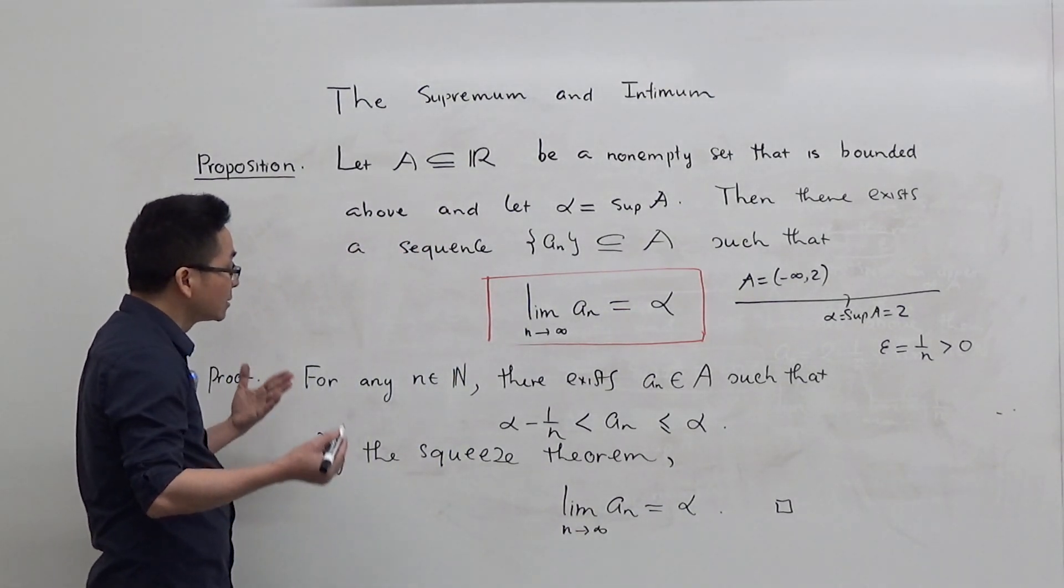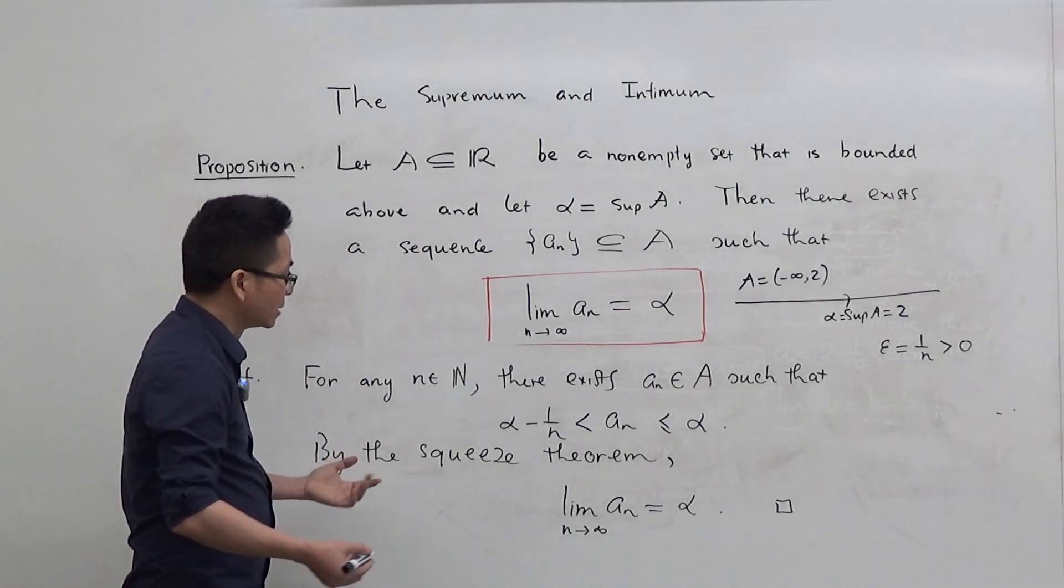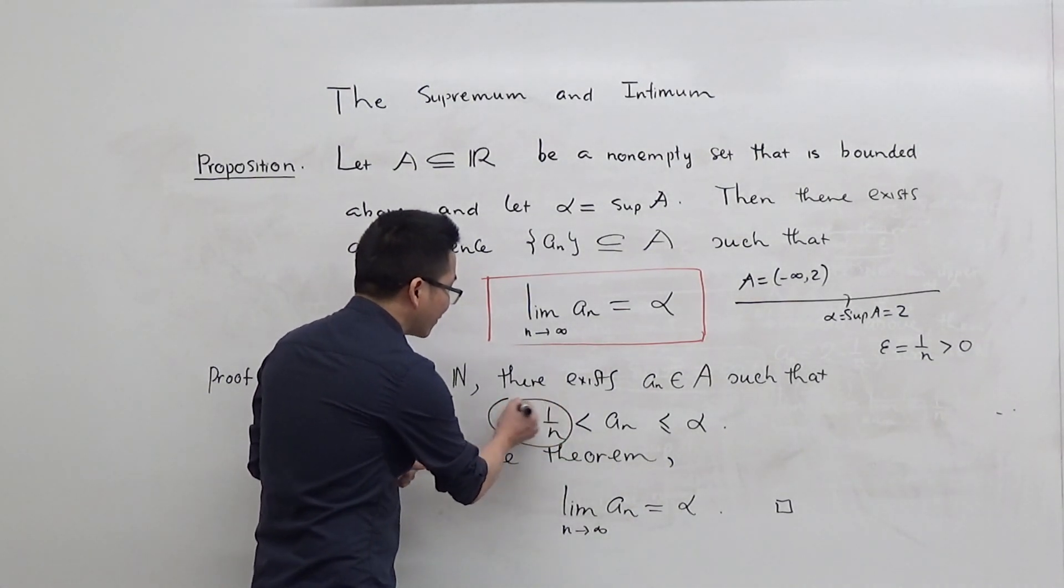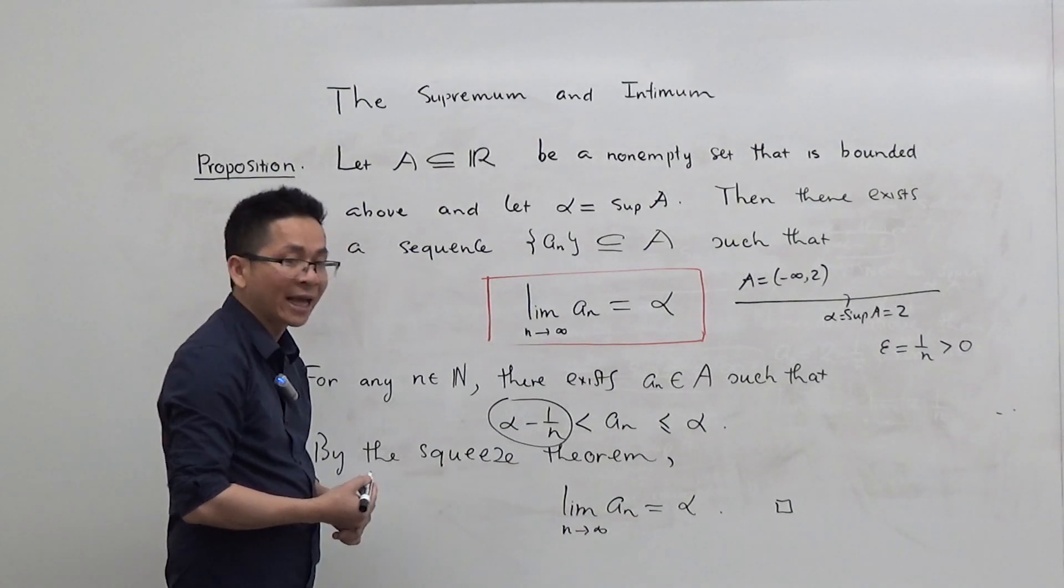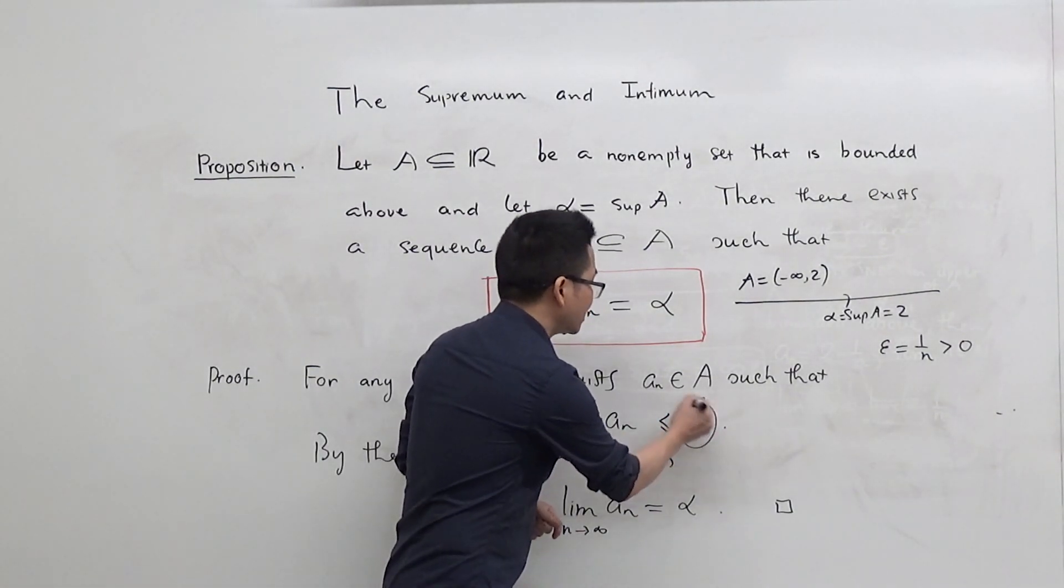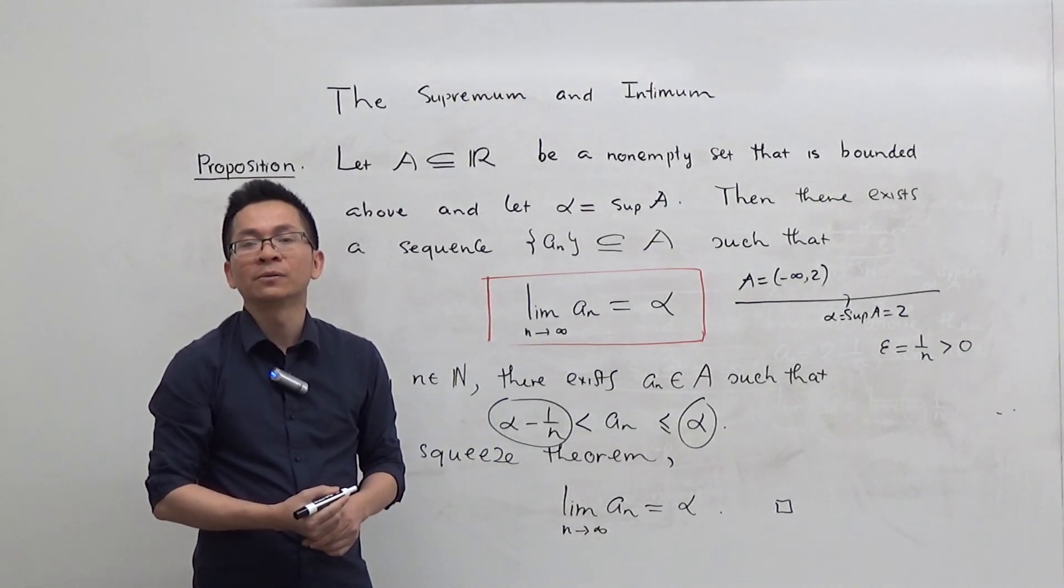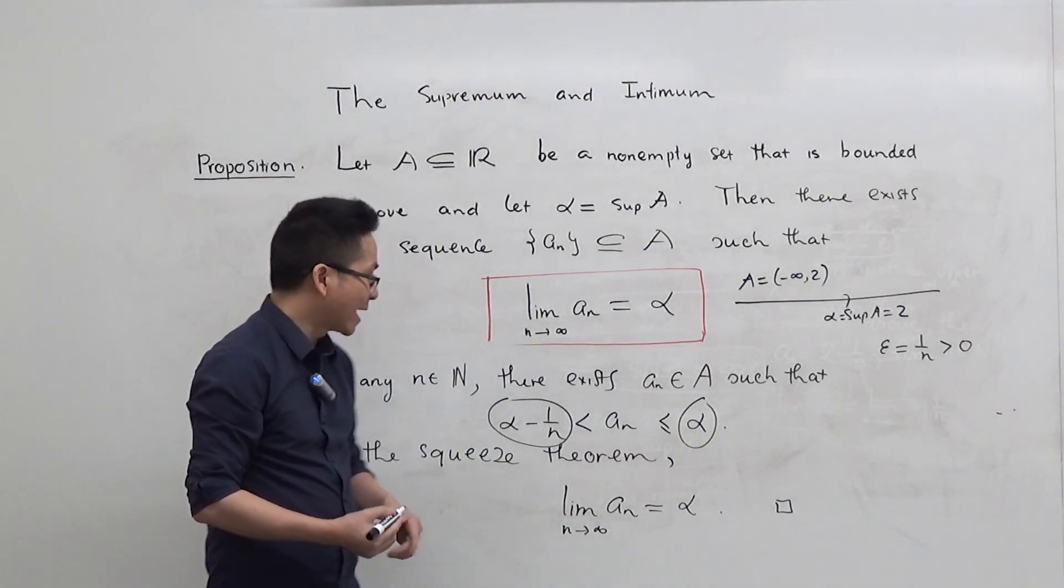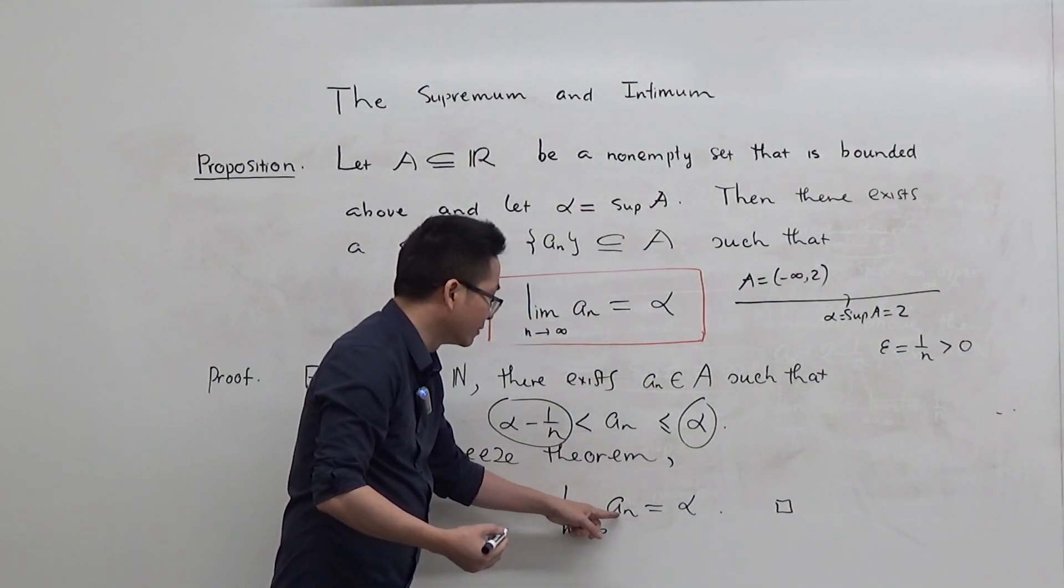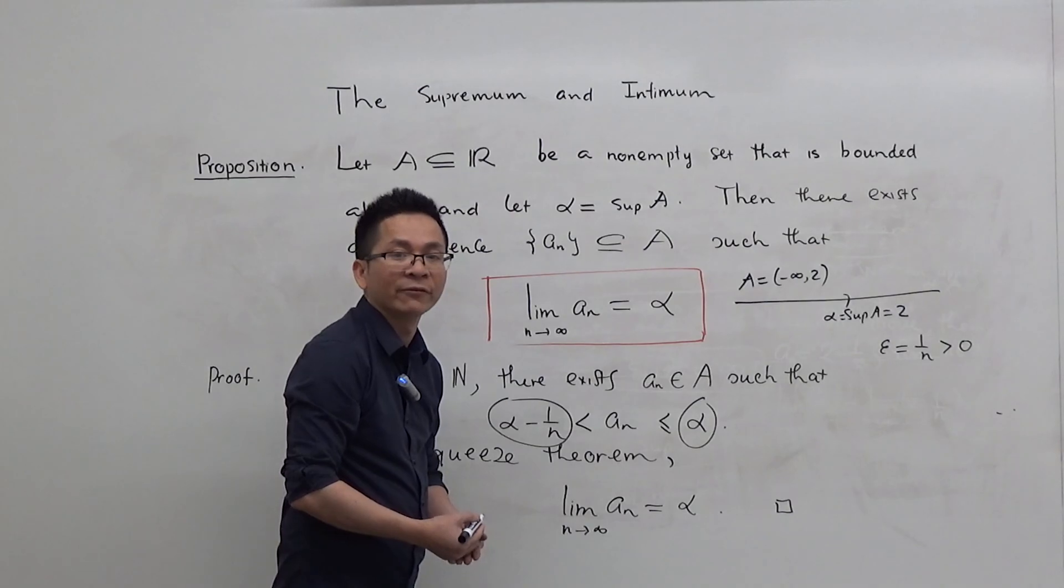And because this is true for all n in N, note that as n approaches infinity, alpha minus 1 over n converges to alpha. And the constant sequence alpha converges to alpha as well. Therefore, by the Squeeze theorem, the limit of A_n as n approaches infinity is equal to alpha.